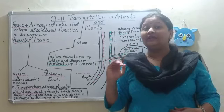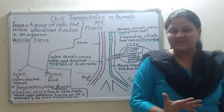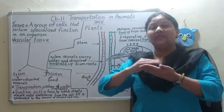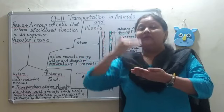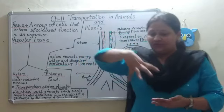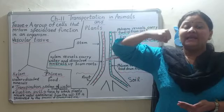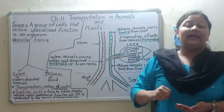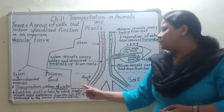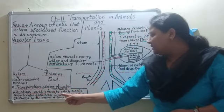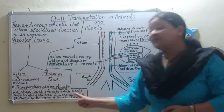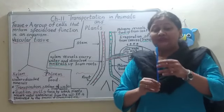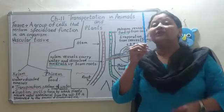One more important thing I would like to tell you is about the process known as transpiration. Transpiration is the release of water through leaves. Water is evaporated through leaves, and once evaporated, it develops a suction pull. By that suction pull, water is pulled to greater heights in a tall tree. Suction pull is a force by which plants absorb water and minerals from the soil, and it is generated by the process of transpiration. It is the same pull we produce when we suck water through a straw.